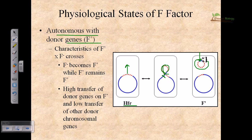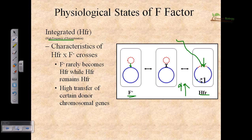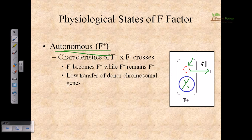We call this autonomous with donor genes because it forms a separate entity from the chromosomal DNA, but due to the presence of chromosomal DNA stretches, it is not totally autonomous. Take-home message: in an F prime cell, there are two things — one chromosomal DNA with a small sequence of extra-chromosomal DNA, and one plasmid DNA with a small stretch of chromosomal DNA. In an HFR strain, there is only one integrated chromosome containing both the chromosomal and plasmid DNA. In an F plus cell, there is one full chromosomal DNA and one full separate plasmid DNA.